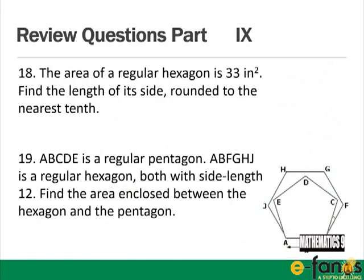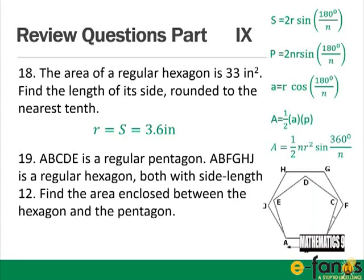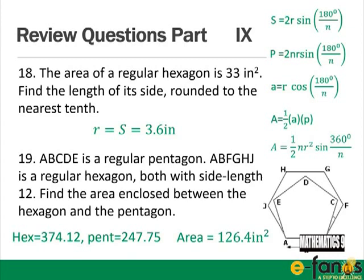Part 9: The area of a regular hexagon is 33 square inches; find the side length. Answer: R equals the side length, which is 3.6 inches. For question 19, ABCDE is a regular pentagon and ABFGHJ is a regular hexagon, both with side length 12. The hexagon area is 374.12, the pentagon area is 247.75, so the enclosed area between them is 126.4 square inches.